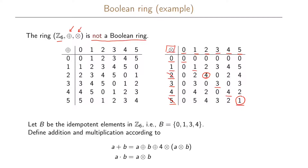What we do now is take all the idempotent elements in this ring Z6. These are the elements 0, 1, 3, and 4. So 0, 1, 3, and 4 are the idempotent elements in this ring.